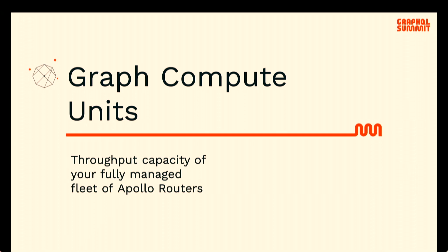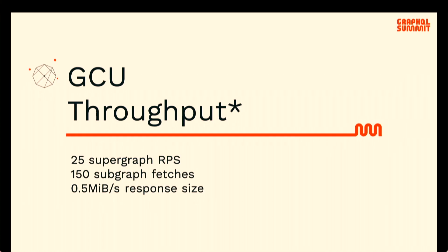Something we haven't talked about publicly yet is how Dedicated works. It's built around a concept of graph compute units, or GCUs — the throughput capacity of your fully managed fleet of Apollo routers. GCUs don't correspond to the number of machines or containers, but we guarantee an amount of throughput for your GraphQL workload. We've run about 80 load tests with different query complexity, subgraph latency, and response sizes. A GCU can generally handle 25 supergraph requests per second, up to 150 subgraph fetches per second, and half a megabyte of response size. If you need more supergraph RPS, you add more GCUs.